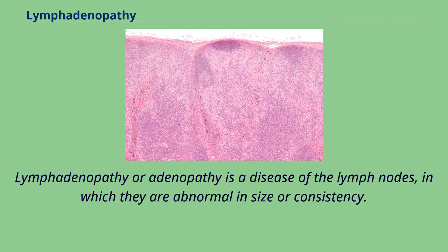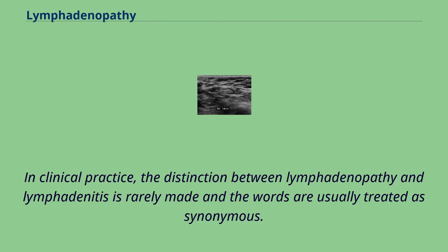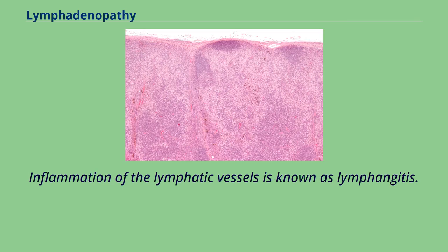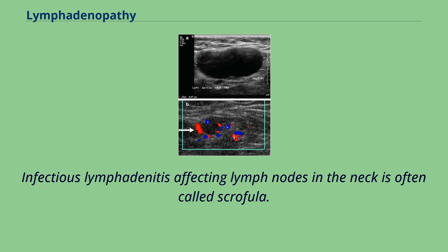Lymphadenopathy or adenopathy is a disease of the lymph nodes in which they are abnormal in size or consistency. Lymphadenopathy of an inflammatory type is lymphadenitis, producing swollen or enlarged lymph nodes. In clinical practice, the distinction between lymphadenopathy and lymphadenitis is rarely made and the words are usually treated as synonymous. Inflammation of the lymphatic vessels is known as lymphangitis. Infectious lymphadenitis affecting lymph nodes in the neck is often called scrofula.